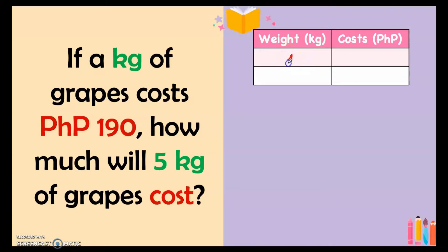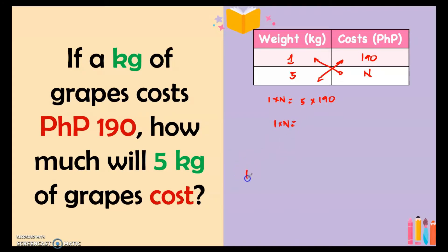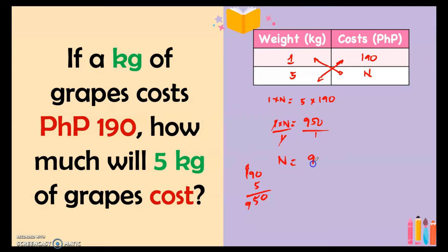To solve this direct proportion, we make a table: 1 kilogram costs 190 pesos, and 5 kilograms costs n pesos. Since this is direct proportion, we cross multiply: 1 × n = 5 × 190, so n = 950. Therefore, 5 kilograms of grapes will cost 950 pesos.